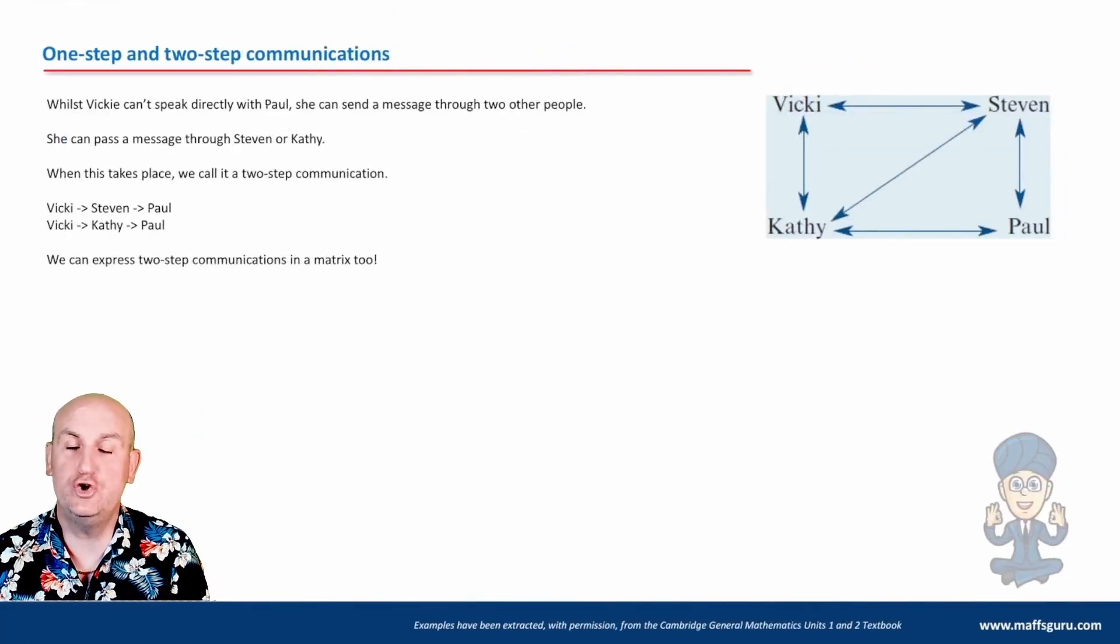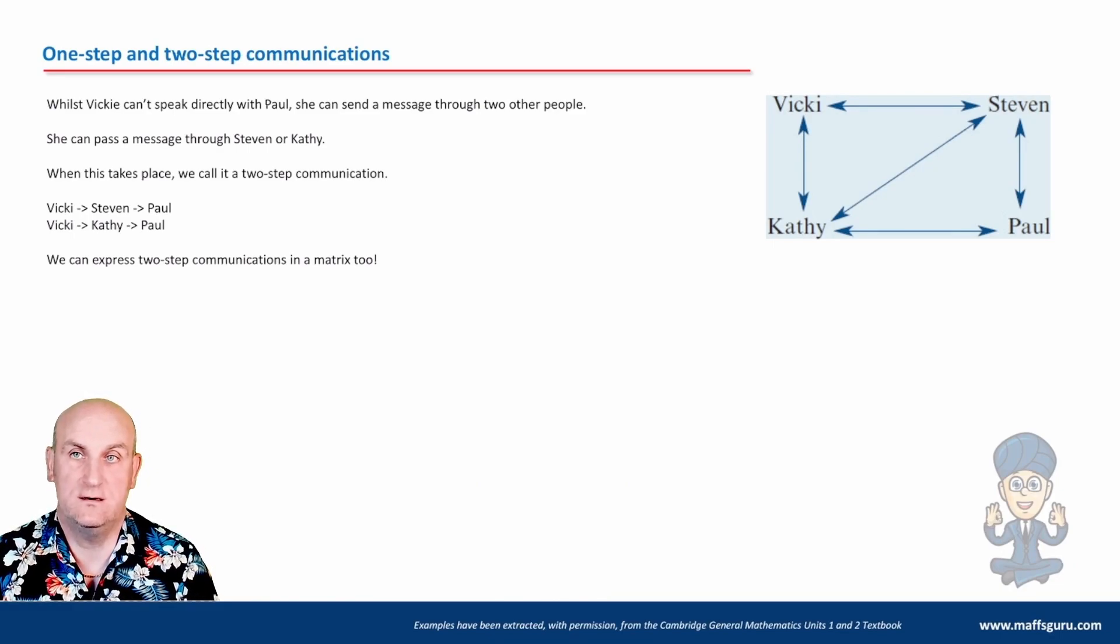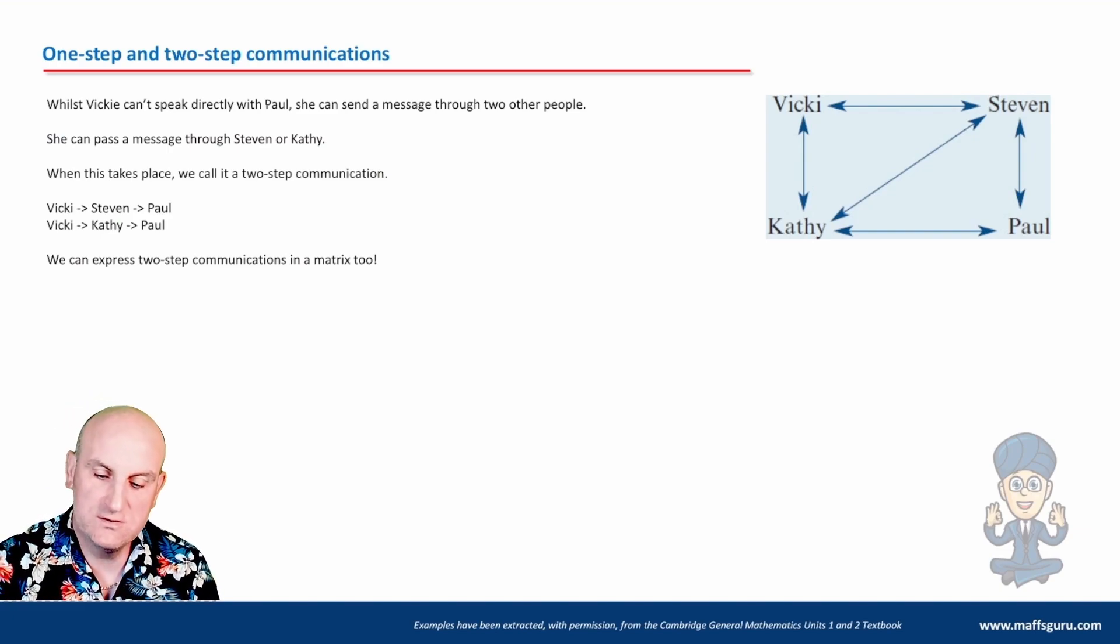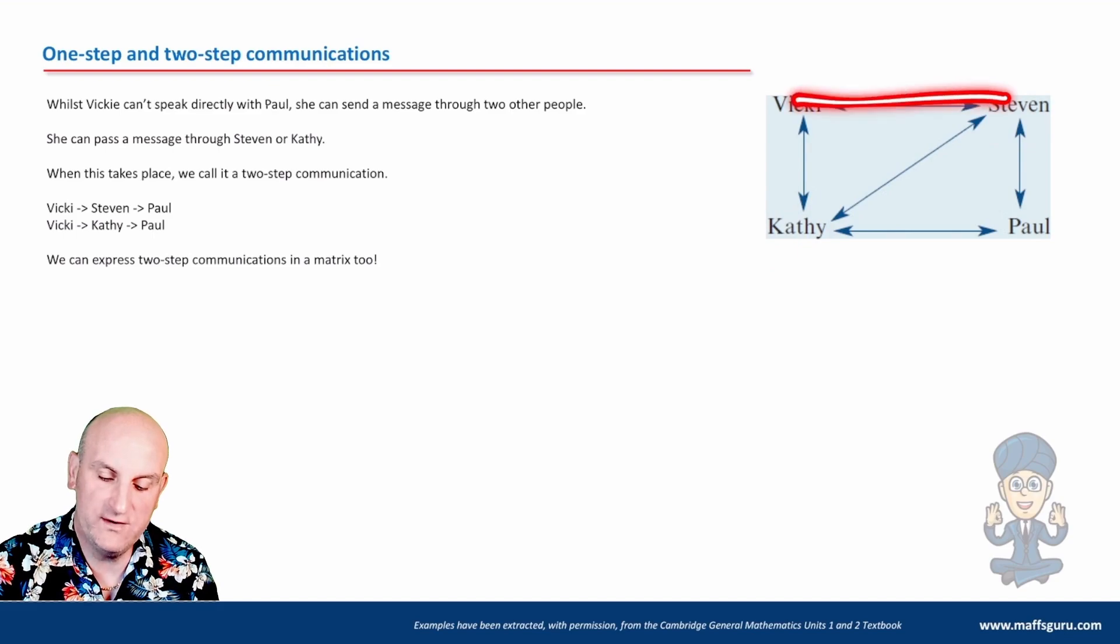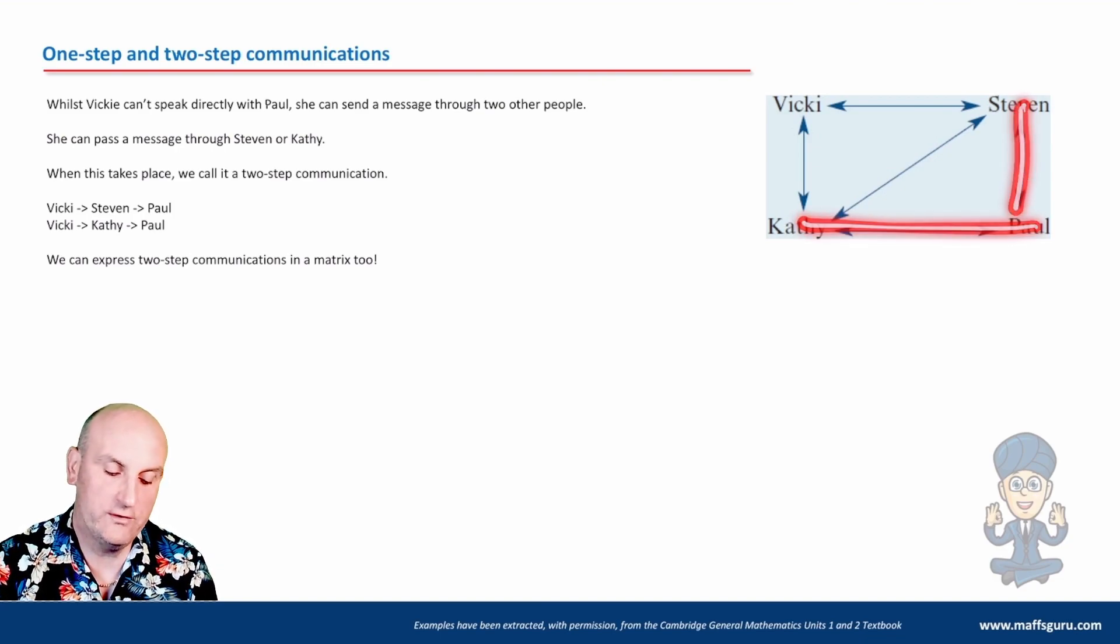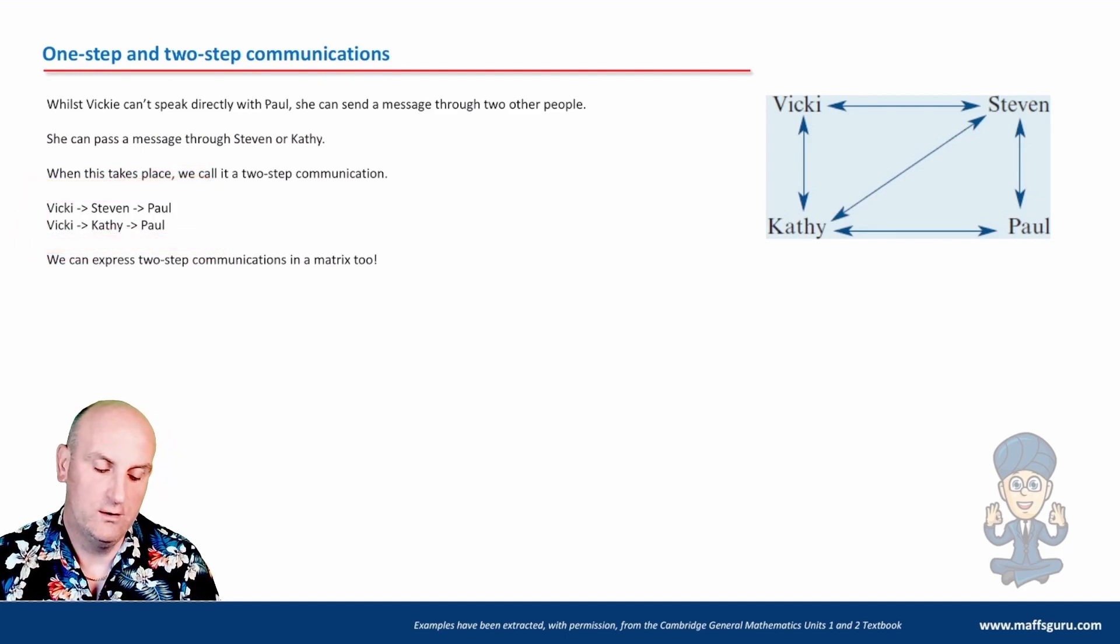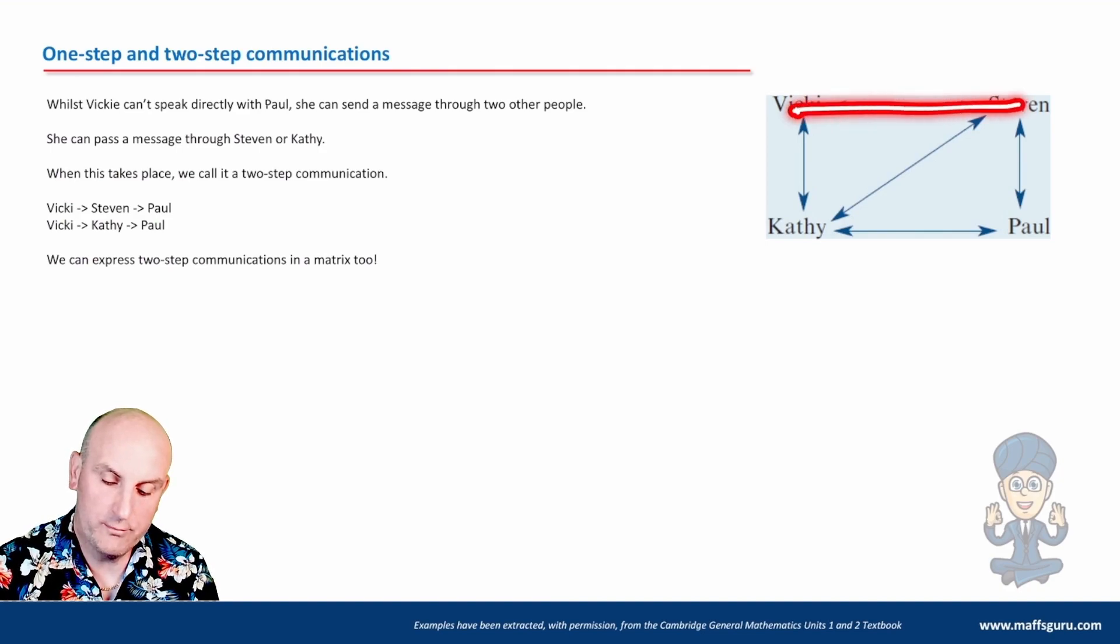But there are such things as two-step communication matrices. Now what that means is I can pass messages. I'm working through someone else. I'm taking two steps to get. So Stephen to Vicky would be one step, Vicky to Kathy would be another step. So Stephen can pass a message to Kathy via Vicky using two steps. One, two. Stephen can also talk to Kathy via Paul. Stephen to Paul. So here we can say Vicky can talk to Paul through Stephen. So Vicky can talk to Paul through Stephen or Vicky can talk to Paul through Kathy.